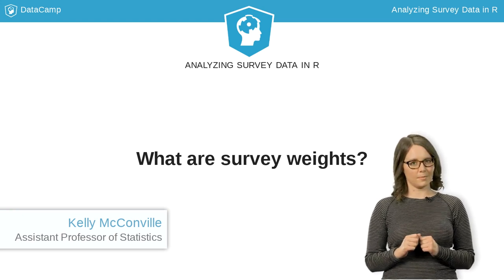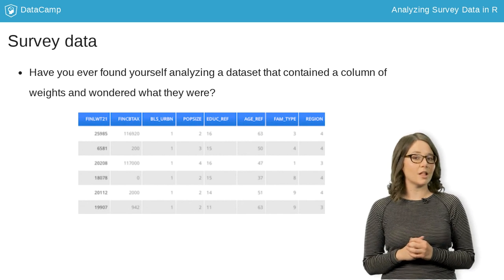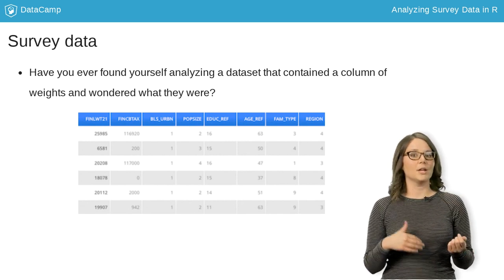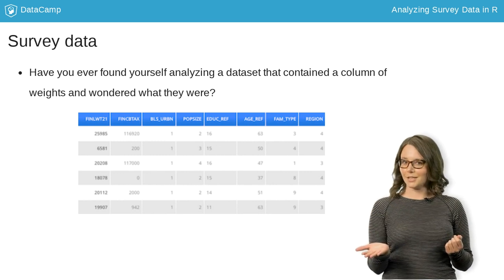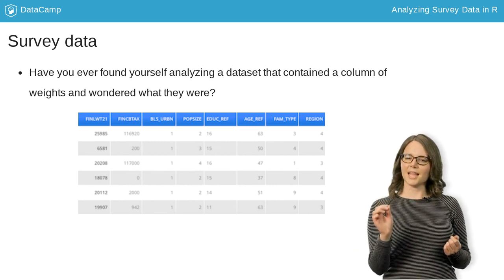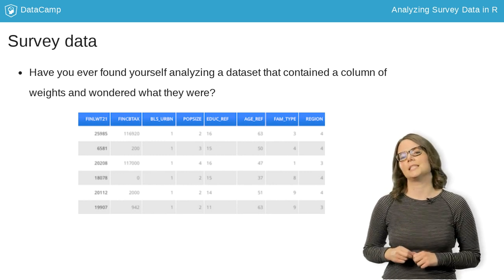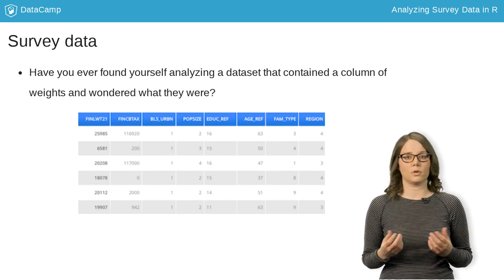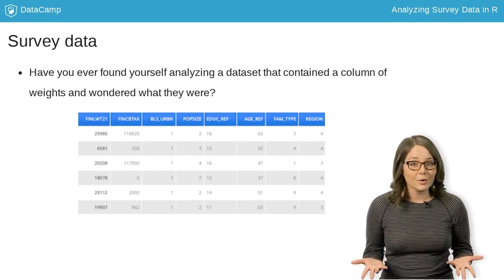I'm wondering if you've ever found yourself in the following situation. You have a question you want to answer, you found a great dataset to answer that question, and then there's this column in the dataset that represents survey weights. And you ask yourself, what are those? Can I ignore those?